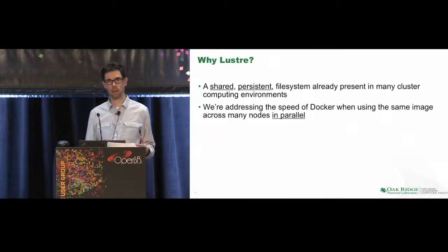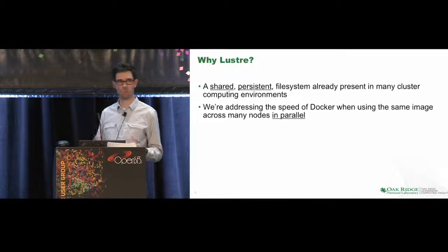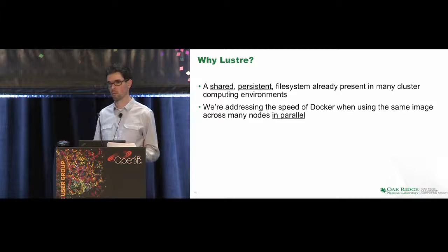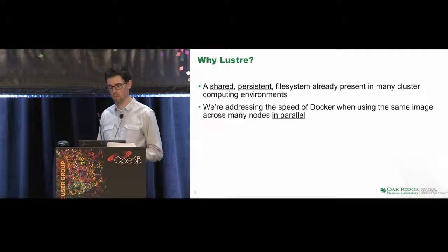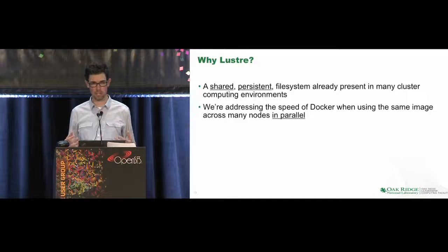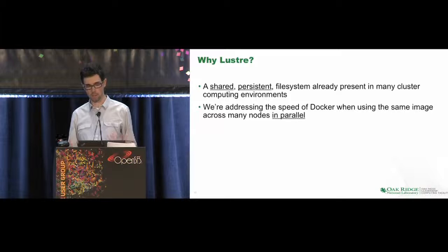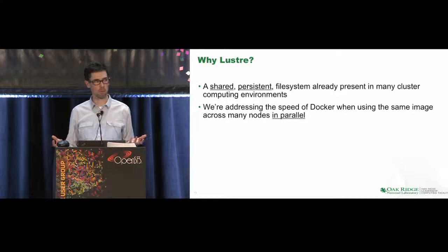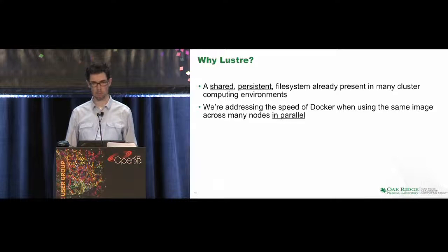So why is Lustre important for this? It's present in most cluster computing environments already — we already use it for shared storage. So if it fits the need as a shared persistent file system, let's leverage it. Why not use NFS? That might be the first choice, but the problem we're trying to solve is speeding up running multiple containers on different nodes in parallel, and we want to leverage Docker's native concurrent request handling capabilities.